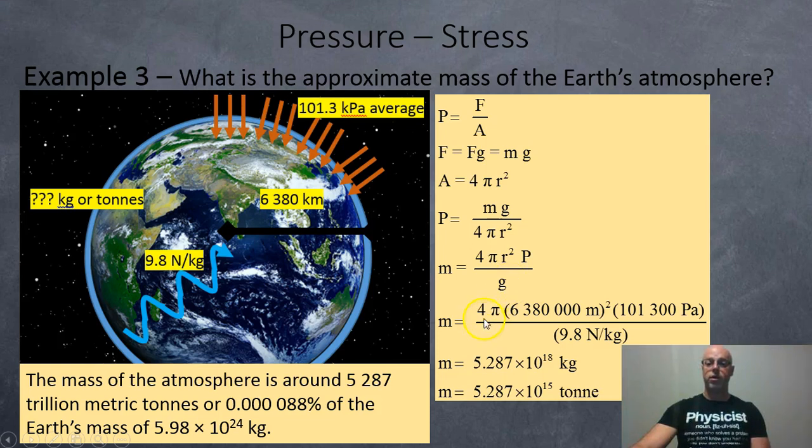So we have to use scientific units. So we have the 4 pi. The 6,380 kilometers is 6.38 million meters. Square that. And the 101.3 kilopascals is the 101,300 pascals. And of course, g on the planet Earth is 9.8 newtons per kilo.